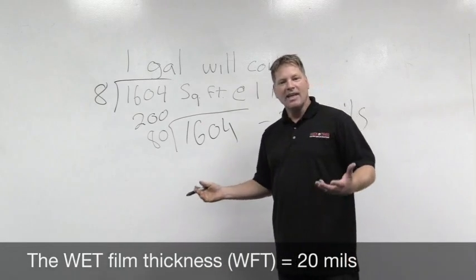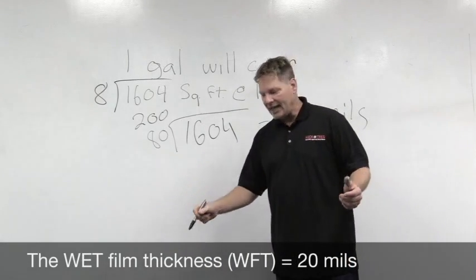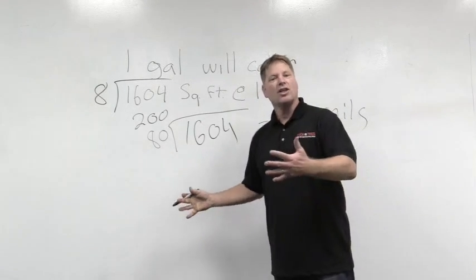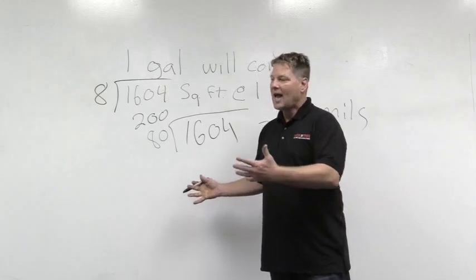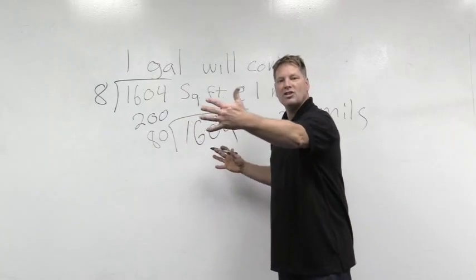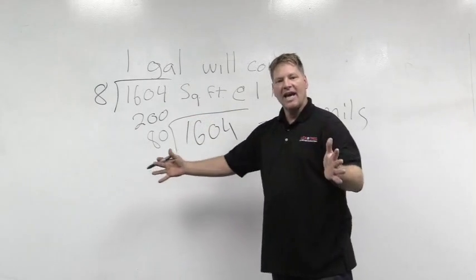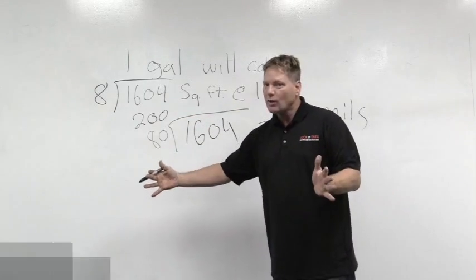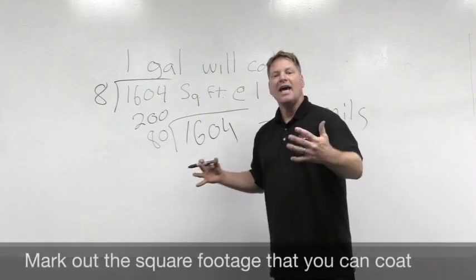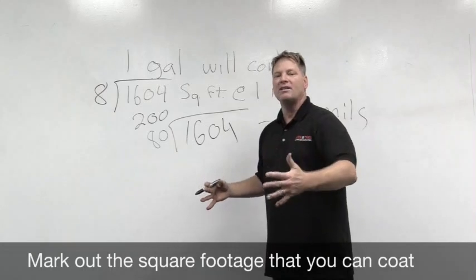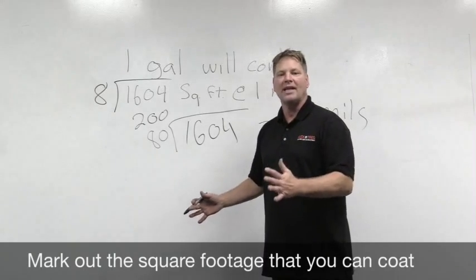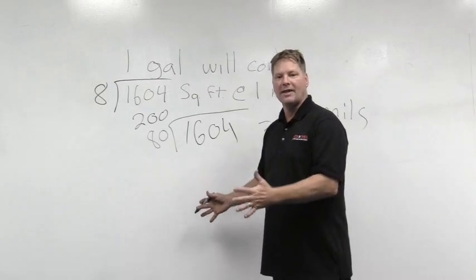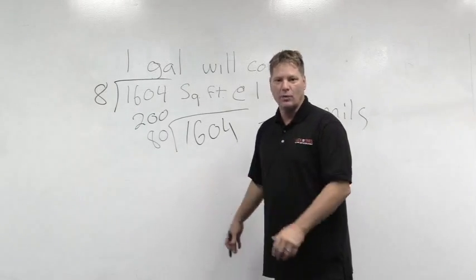Now I can take my wet film gauge and mark it off as a QC method. I can also put some tape out at about 80 square feet a gallon and double-check it to make sure I'm getting the appropriate thickness onto the floor.